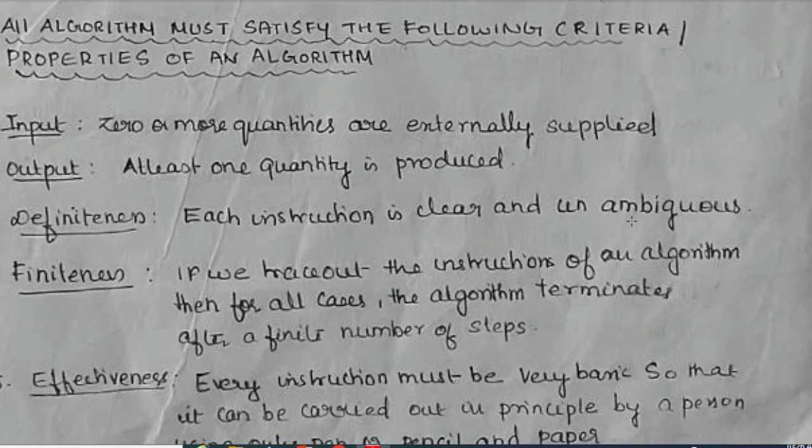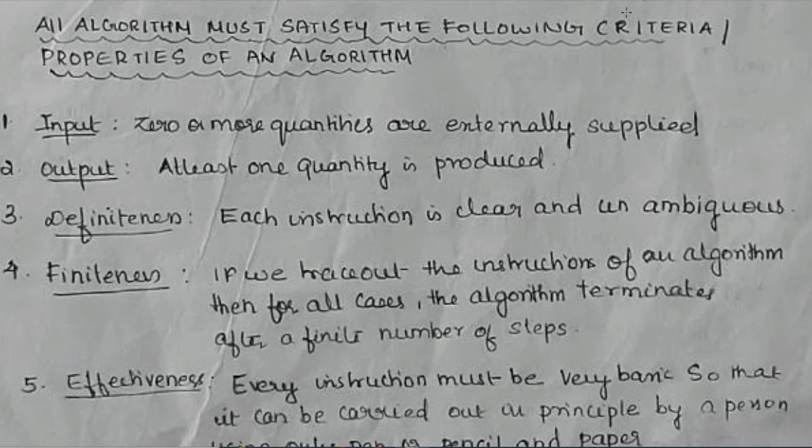You might have got some concept about an algorithm. Now, let us check what are the criteria or what are the properties or what are the characteristics of an algorithm. The first property of an algorithm is the algorithm should have an input.